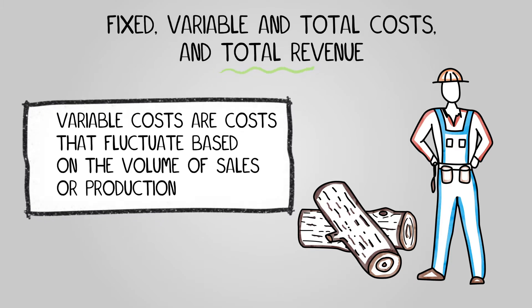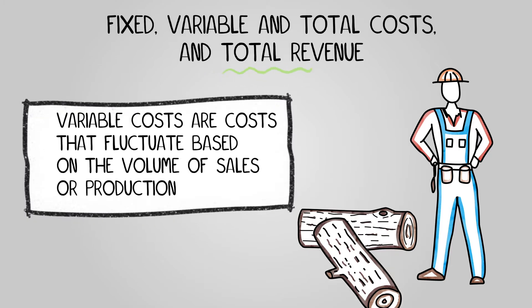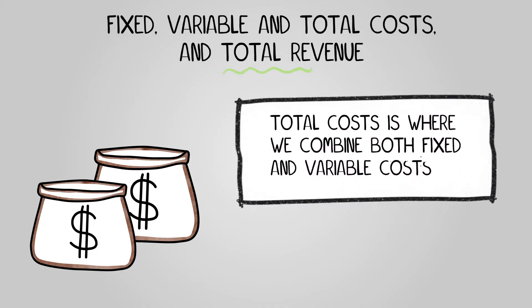If you produce more goods, these costs rise and vice versa. Examples include direct labor and materials like cement or wood. Total costs is where we combine both fixed and variable costs.